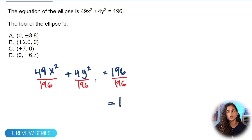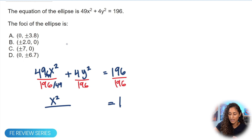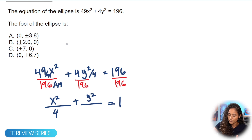Now we simplify these two terms. For the first term, we divide by 49, giving us x squared, and divide 196 by 49 which gives us four — so it becomes x squared over 4. For the second term, we divide 4y squared by 4, giving us y squared, and 196 divided by 4 gives us 49 — so that becomes y squared over 49.